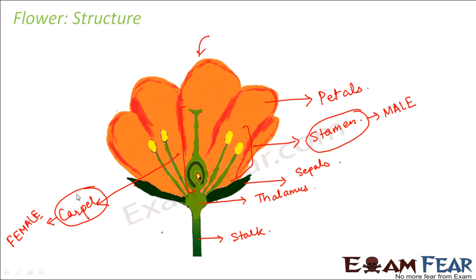To understand the structure best, you can take a china rose flower, which is also called gurhal or hibiscus. This china rose flower would help you to see both the female and the male parts very distinctly. In the next few slides we are going to understand the function of each of these parts of the flower.